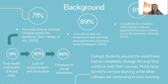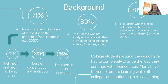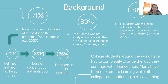Some background on this topic: there's a 71% rate of indicated stress during the pandemic. 91% of students said their health and the health of loved ones is a concern. 89% reported loss of concentration and motivation, and 86% had decreased social interaction. 89% of students studying in class said they experienced increased stress, and 81% of students who moved to online classes experienced increased stress due to the pandemic.